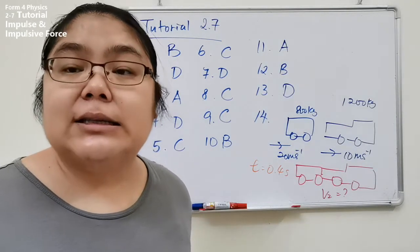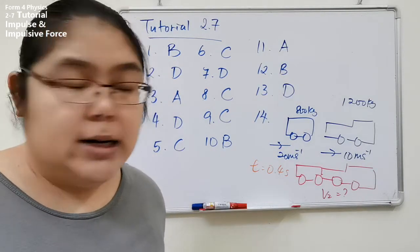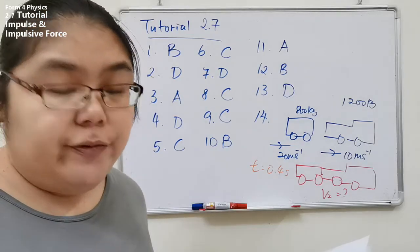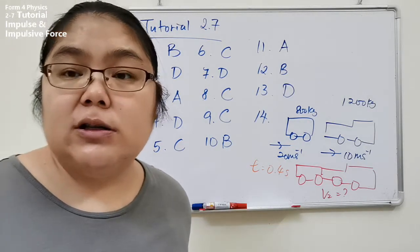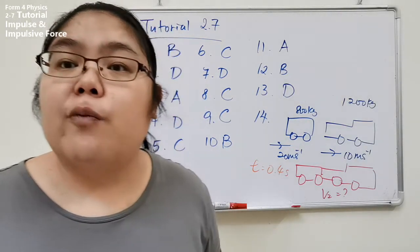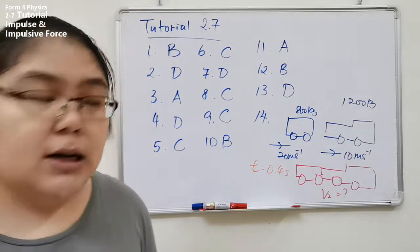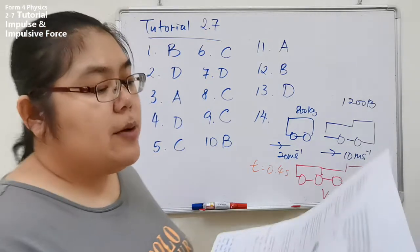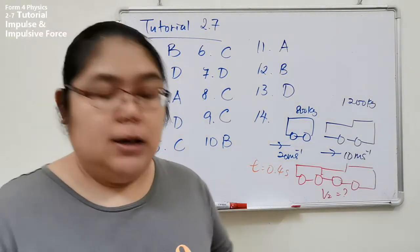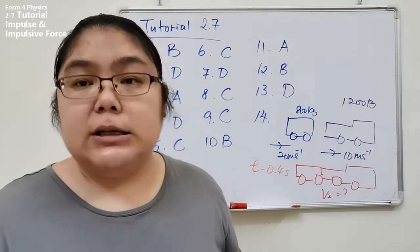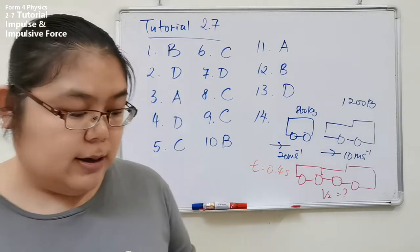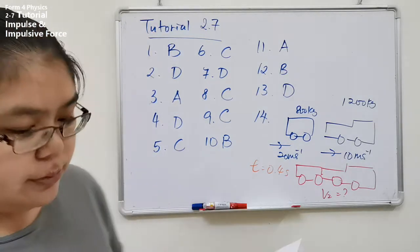Inelastic collision means they are stuck together and move with the same velocity. That velocity we call the common velocity. So from here we need to use the inelastic formula to calculate the answer.